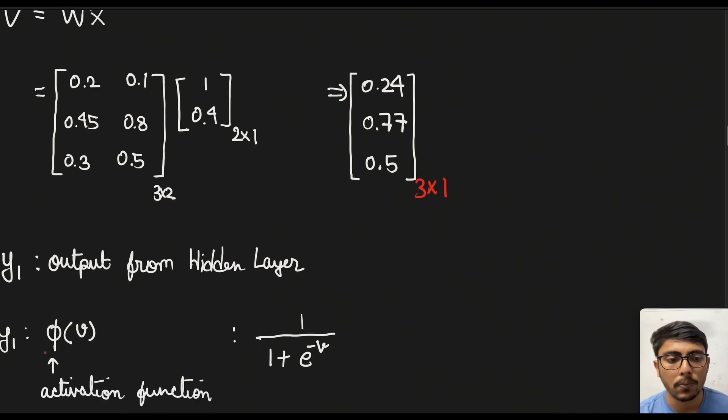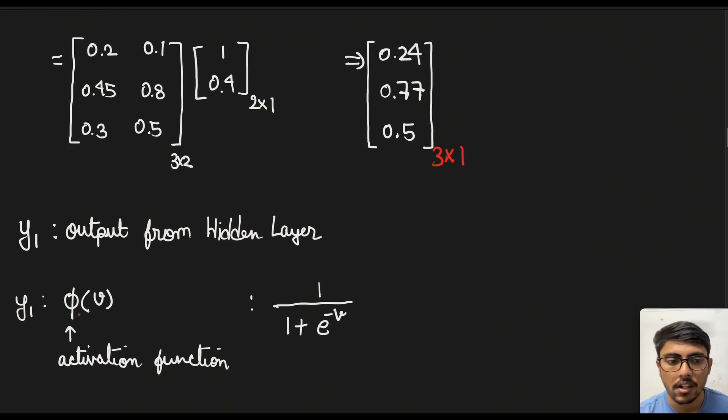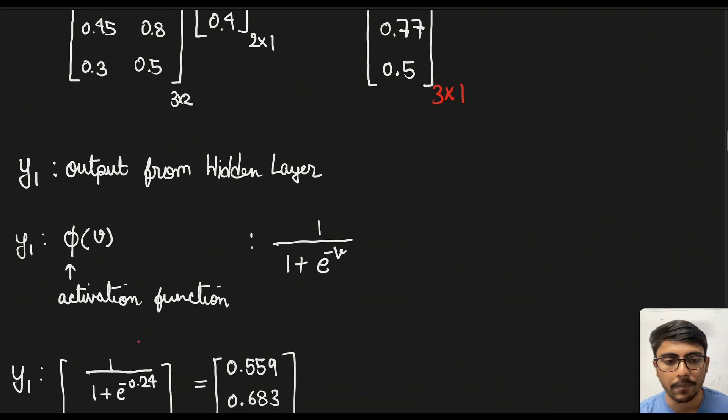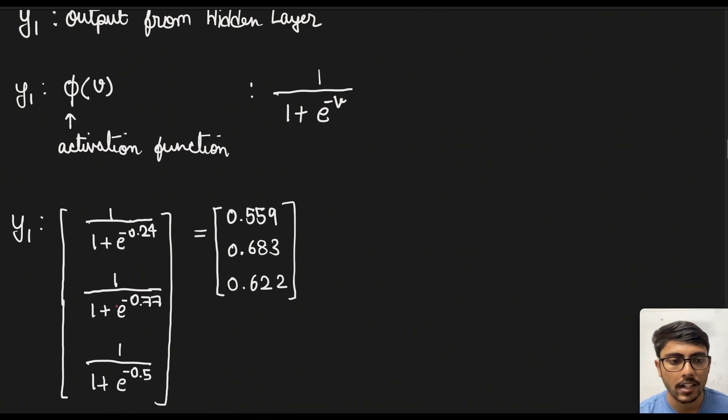Now we create the output. So for creating the output we will use the activation function which in our case is the sigmoid function. So we will just simply put these values into this function and calculate. So if we put it that way then y1 comes out to be this matrix.